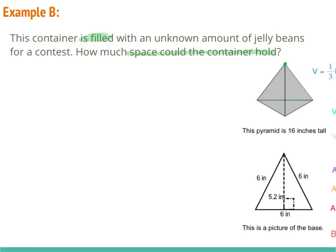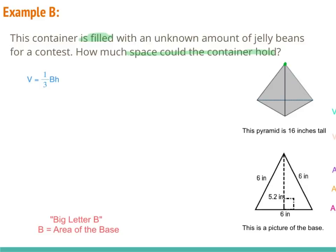Our volume formula for a pyramid is one-third times big B times H. Big B is the area of the base, and since the base is triangle-shaped, we need the area formula for a triangle: one-half little b times H. Looking at the picture of the base, the base of the triangle is 6 and the height is 5.2. Plugging those in: one-half times 6 times 5.2 gives us 15.6. You can use your calculator if needed.